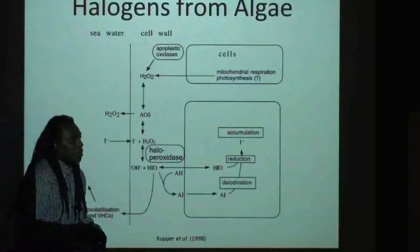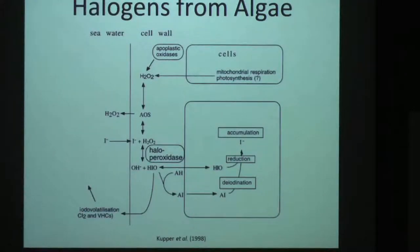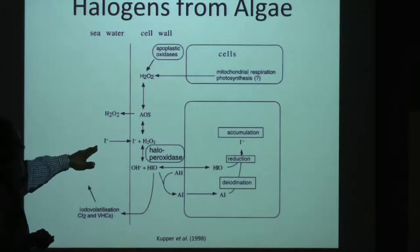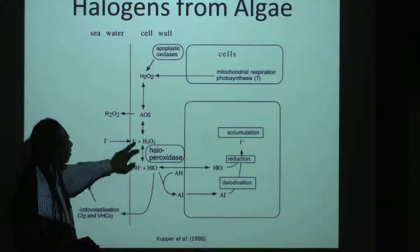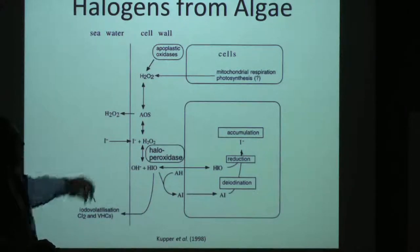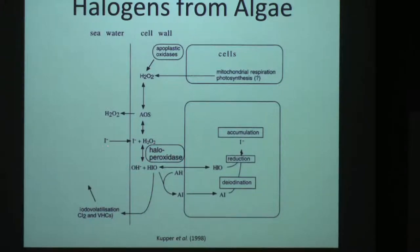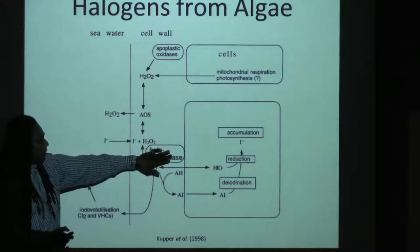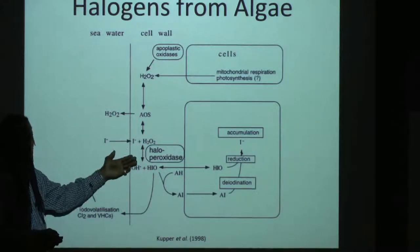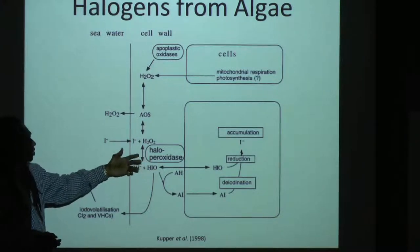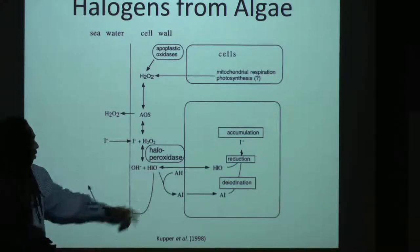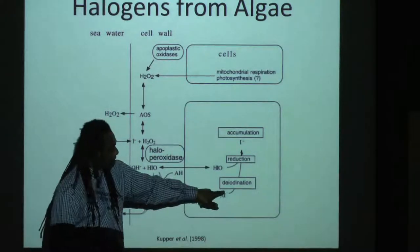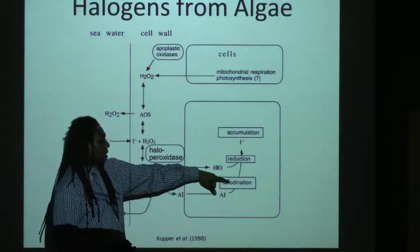For some reason, these species — whether they're macro or microalgae — they like to take up iodine. This is a mechanism of how iodine may be taken up by an algae cell, where you have apoplastic oxidases as sources of hydrogen peroxide, which is then used to oxidize iodine. And if you have this catalyst — haloperoxidase — and vanadium metal catalysts discovered in algae, they catalyze this reaction to hypoiodous acid, HOI, which can react with organic matter and then go through a deiodination reaction to release iodine.